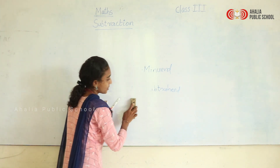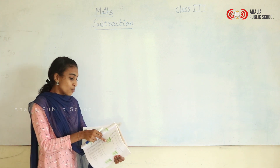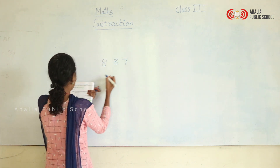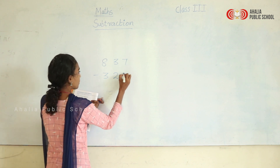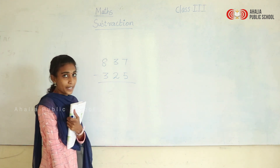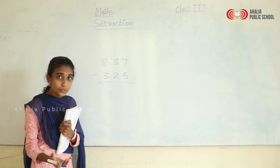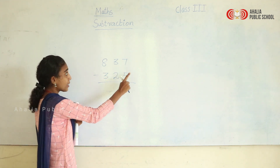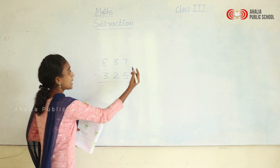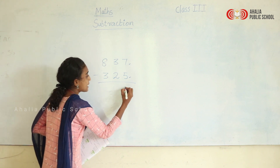Moving on — subtraction of three-digit numbers. Similar to addition, we will be learning subtraction of three-digit numbers. Have a look at this question: 837 minus 325. Here 837 is the bigger number and 325 is the smaller. We are going to subtract 325 from 837. Starting from the ones place: 7 minus 5 — the answer is 2.